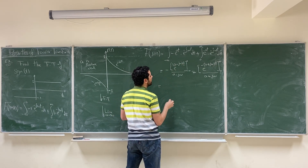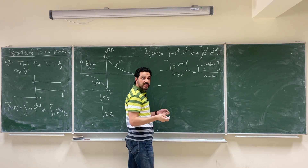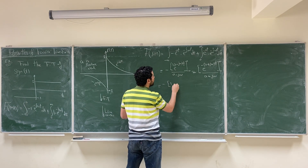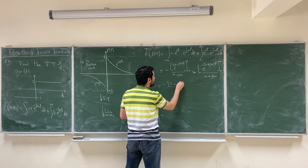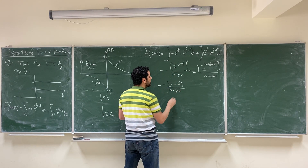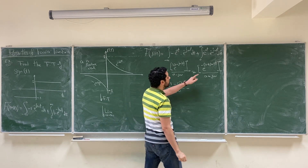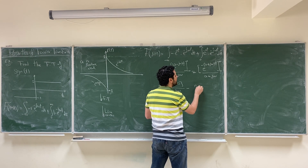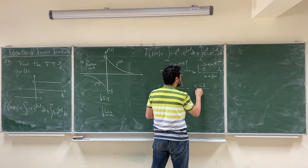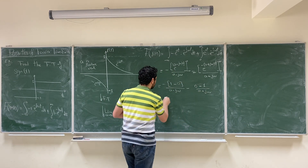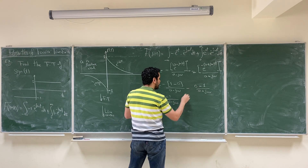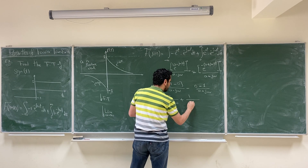Substituting the limits: for the first integral from minus infinity to 0, combining the exponentials gives e^((a−jω)t)/(a−jω), evaluated from −∞ to 0. For the second integral from 0 to infinity, combining gives −e^(−(a+jω)t)/(a+jω), with a negative sign. Substituting: e^0 = 1, e^(−∞) = 0, so the first part gives 1/(a−jω). For the second part, e^(−∞) = 0 and e^0 = 1, giving −(−1)/(a+jω). The result is: −1/(a−jω) + 1/(a+jω).